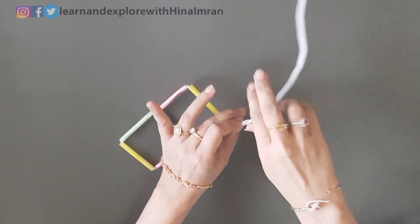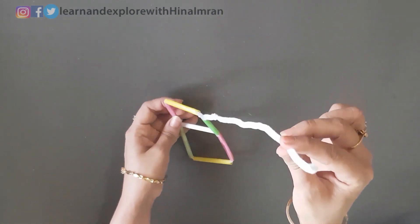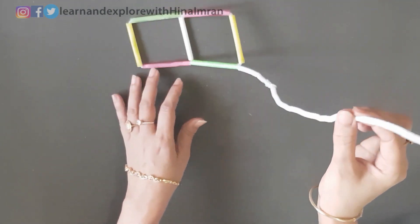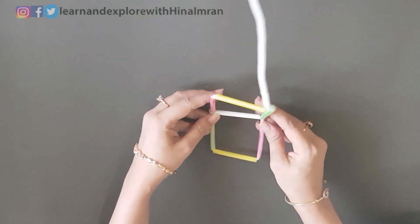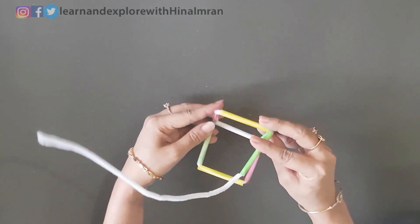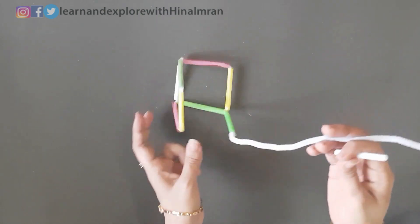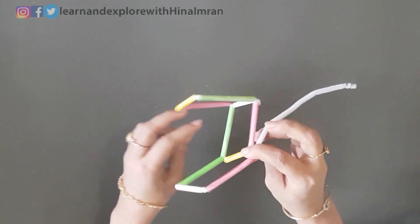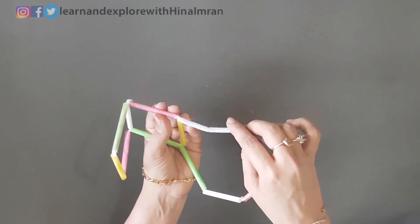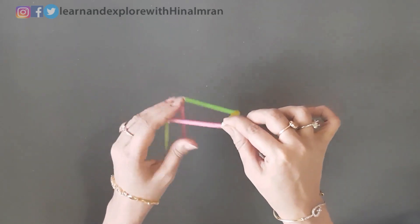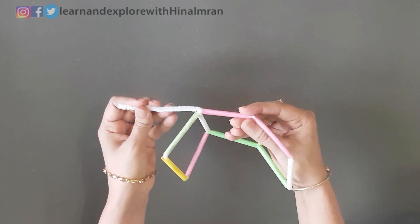Twist it. So now we again have a longer pipe cleaner and we need to put straws again. Now bend it like this. Now you will be needing two more straws. Now again we are going to insert this straw inside so that it comes out from the other end. Just like stitching. We need another pipe cleaner because we are running short.